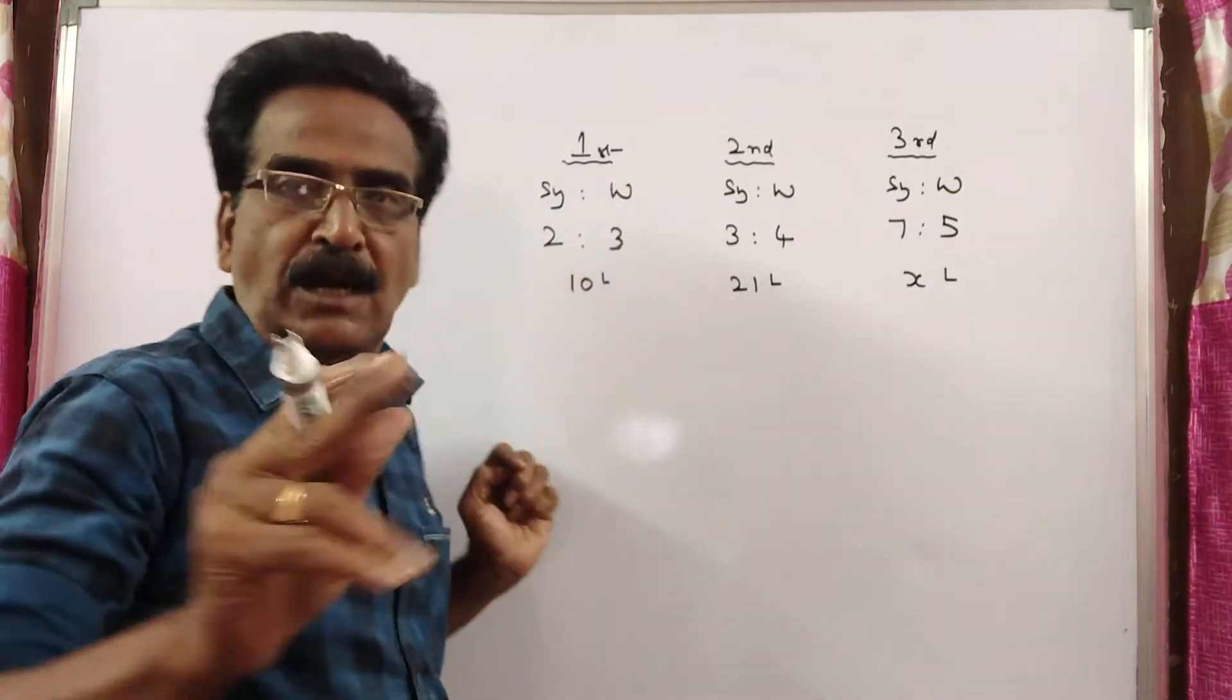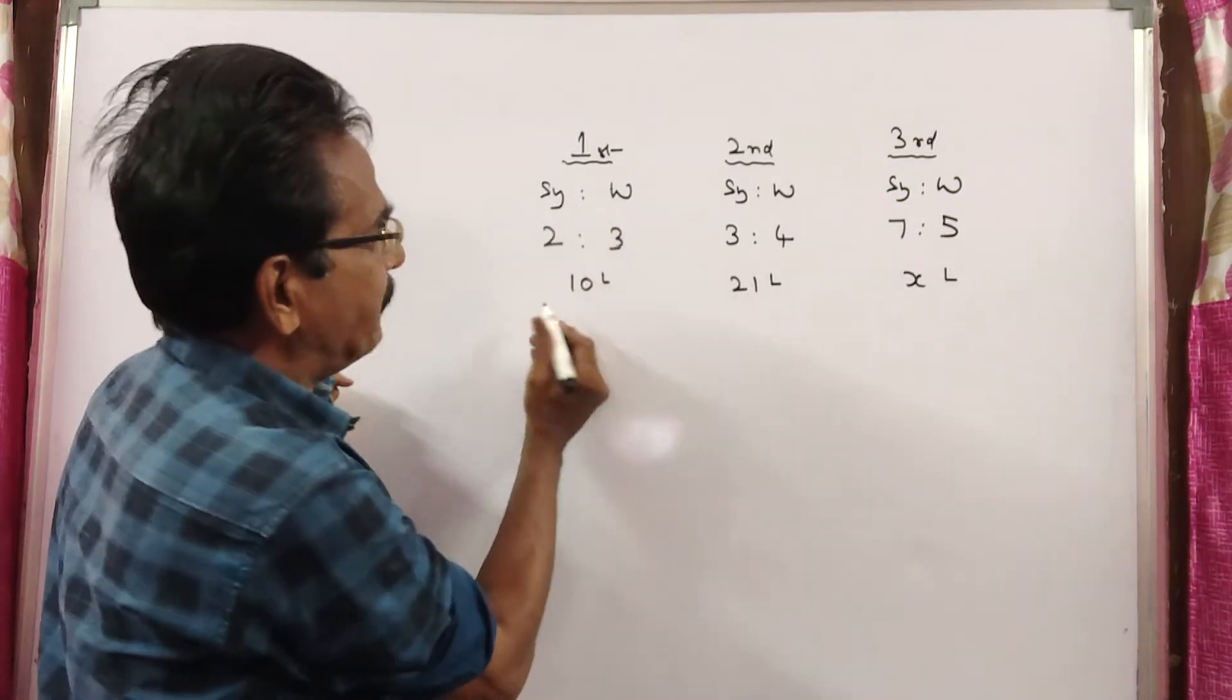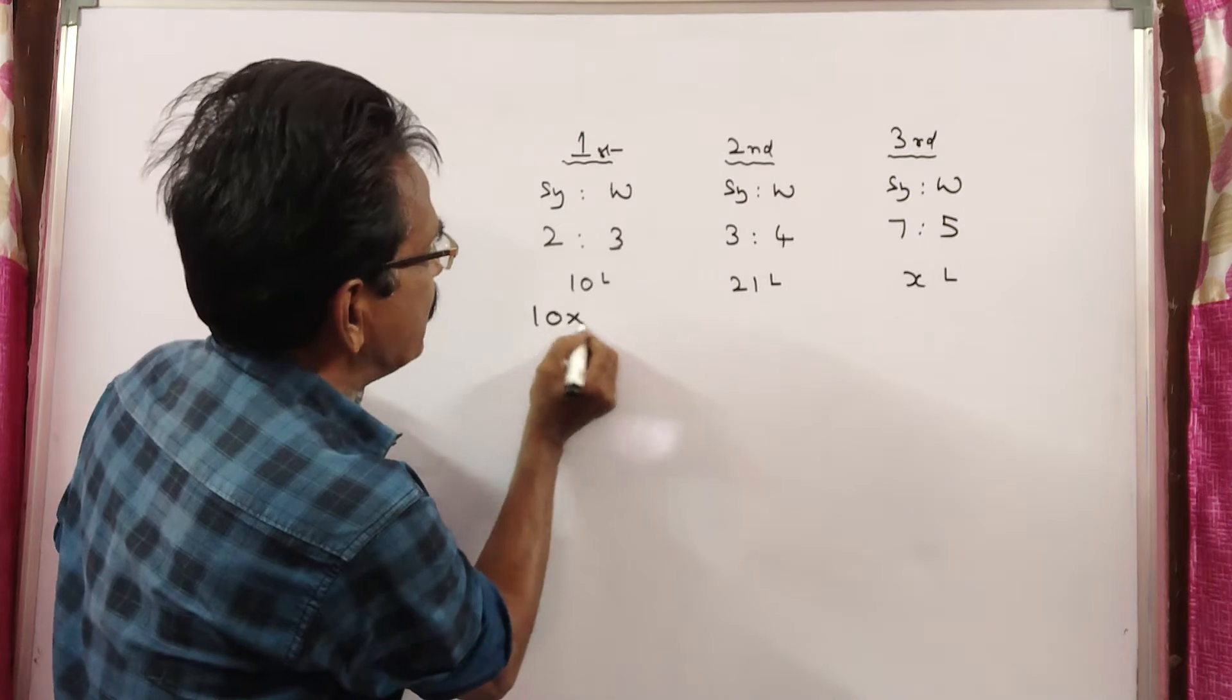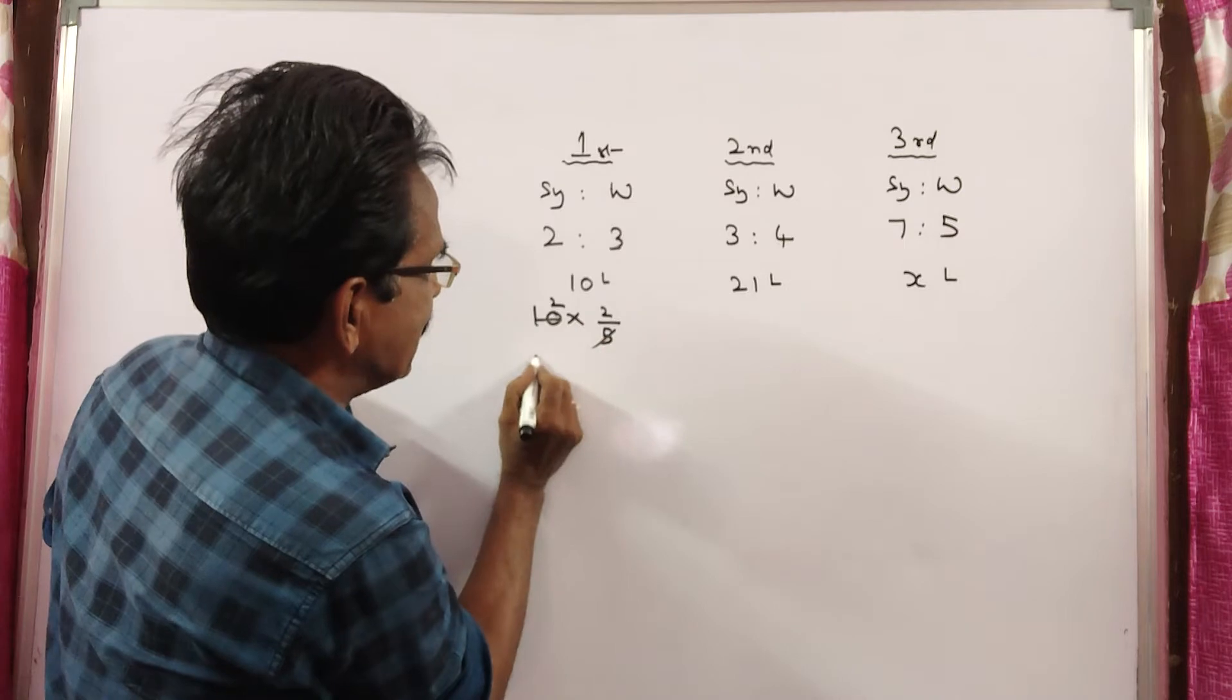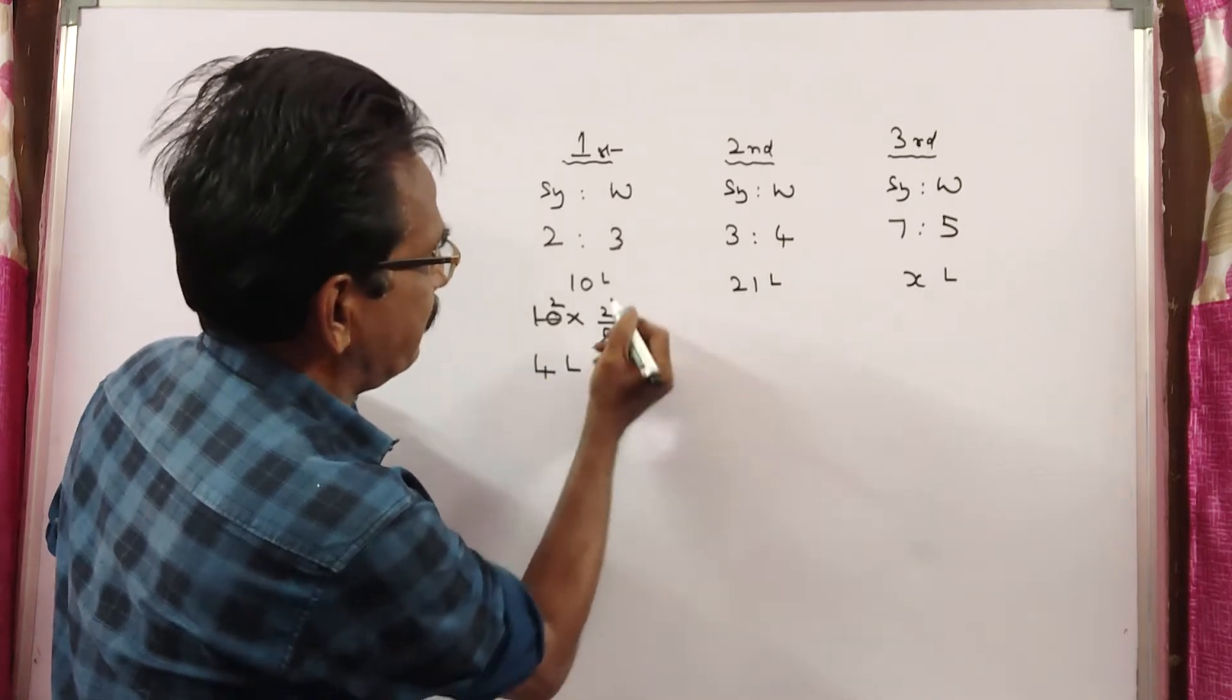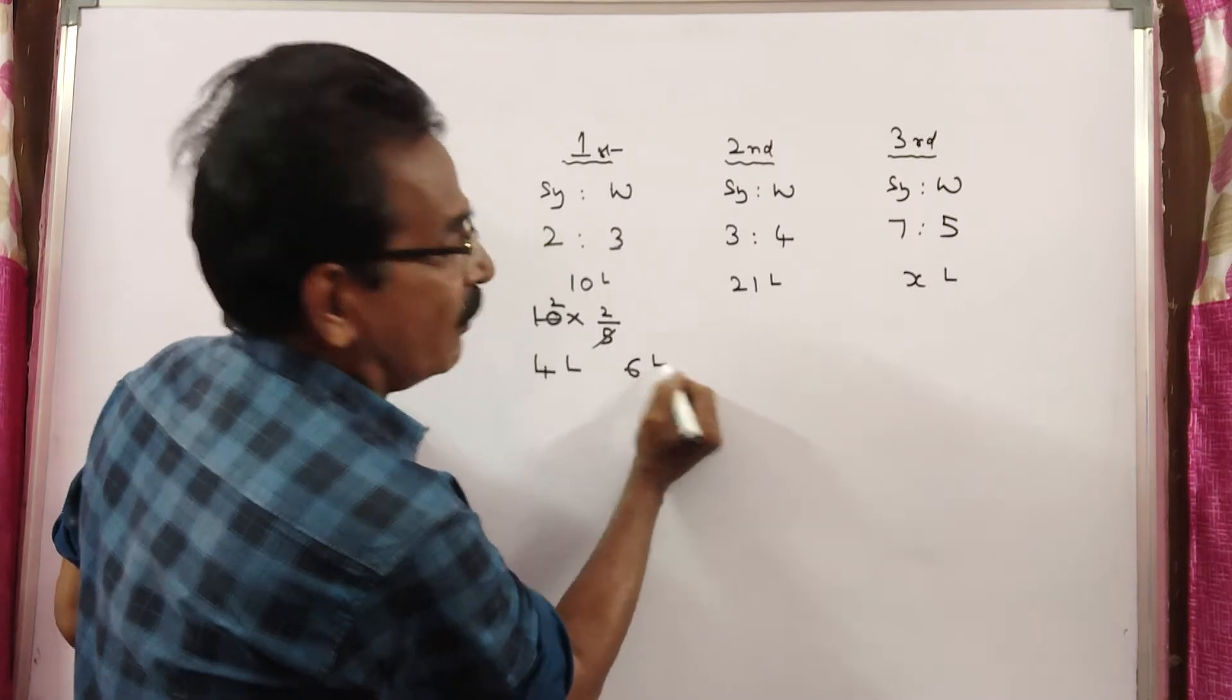From the first bottle, we have drawn 10 liters. How much syrup is drawn? 10 times 2/5, which equals 4 liters of syrup. That means 10 minus 4 equals 6 liters of water is drawn.